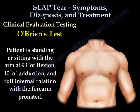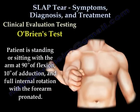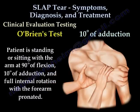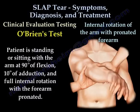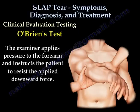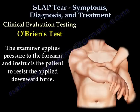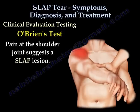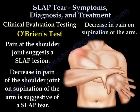Here's an example of how to perform the O'Brien test. The patient is standing or sitting with the arm at 90 degrees of flexion, 10 degrees of adduction, and full internal rotation with forearm pronated. The examiner applies pressure to the forearm and instructs the patient to resist the applied downward force. Pain at the shoulder joint suggests a slap lesion. A decrease in pain at the shoulder joint on supination of the arm is suggestive of a slap tear.